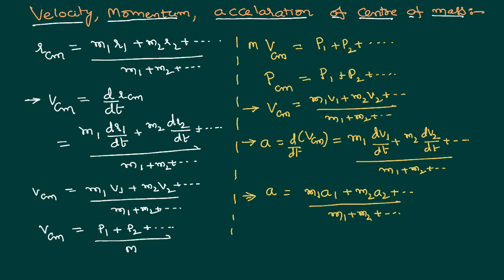In this way, we can calculate the velocity, momentum, and acceleration of the center of mass. The center of mass is a point of a body which represents the actual motion of the body. Depending on the system, the position R, momentum P, velocity V, or acceleration can be expressed using X components for one dimension, X and Y components for two dimensions, or X, Y, and Z components for three dimensions.